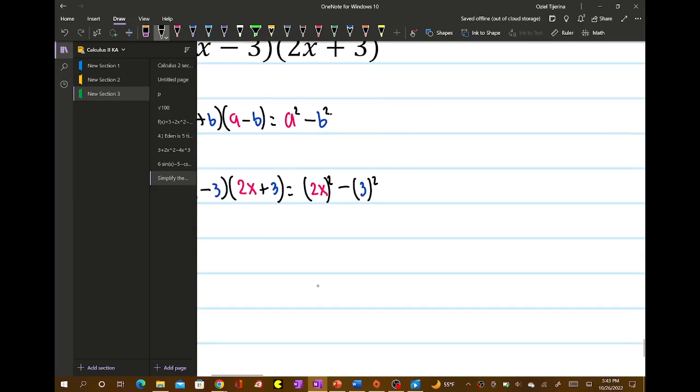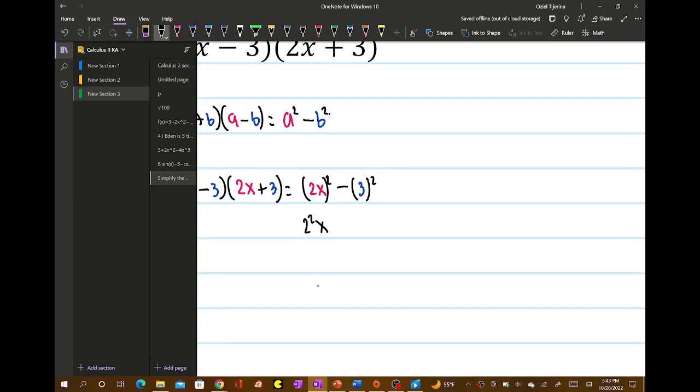So 2x quantity squared, remember it would be 2 squared x squared, and then minus 3 squared is 9. So this would simplify to 4x squared minus 9.